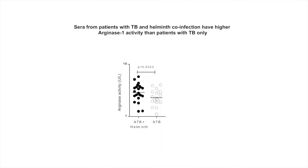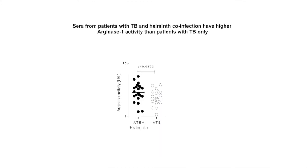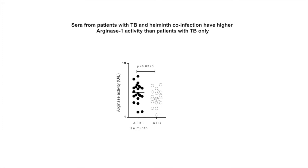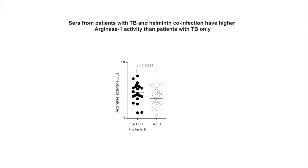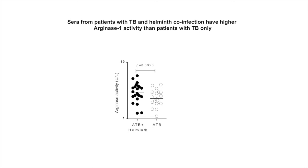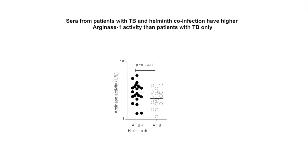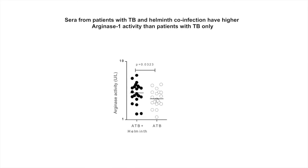Not only were these results observed in mice co-infected with tuberculosis, but when we measured the arginase activity in sera of human active tuberculosis patients who were co-infected with helminths, we found increased arginase activity when compared to sera from active TB patients without helminth co-infection.